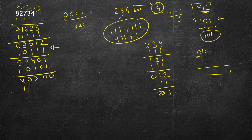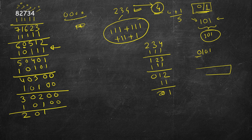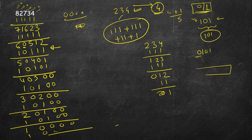Continuing: subtract 10101 to get 30200, then 10100 to get 20100, then 10100 to get 10000, then subtract 10000 itself to get 00000. That's steps 1 through 8. So if you add these 8 decibinary numbers you get 82734. The answer is 8, and the order of the numbers does not matter.